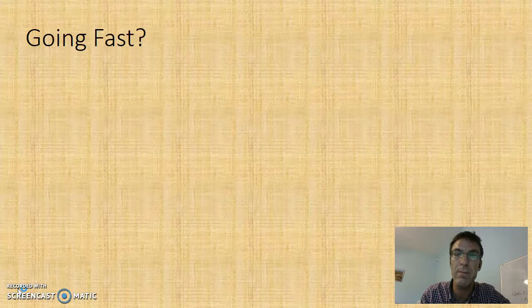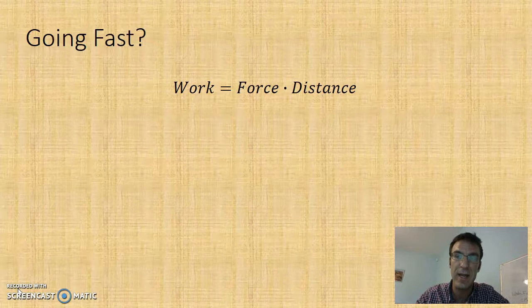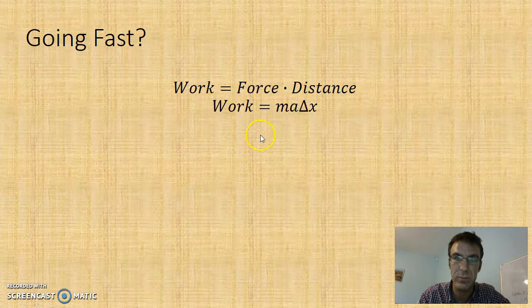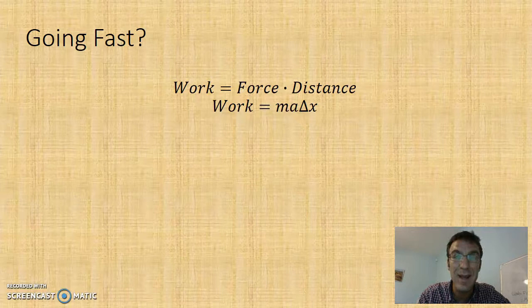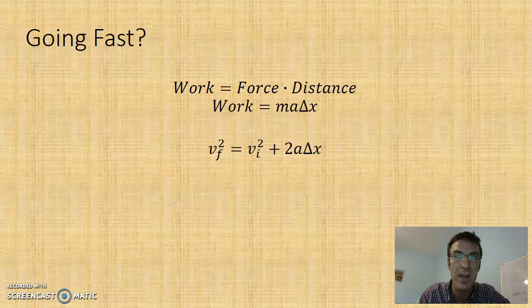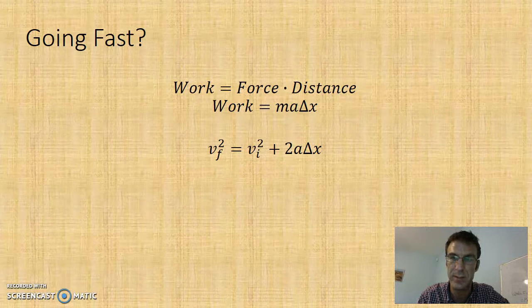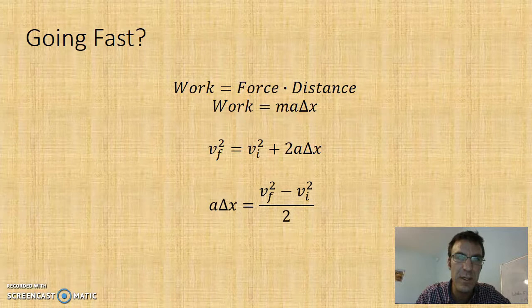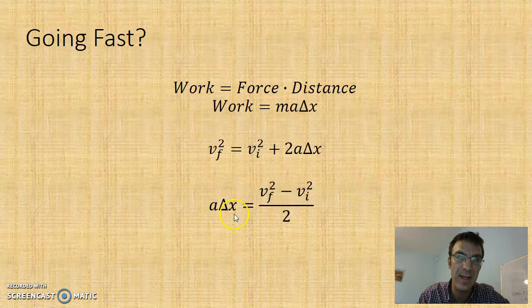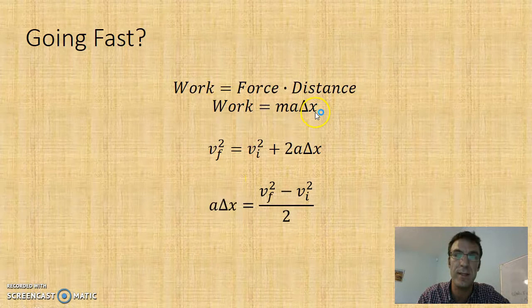Let's talk about work and how it relates to motion. We know work is force times distance. Force is mass times acceleration, and distance is Delta X displacement. We can do a bit of tweaking with an equation we know to get acceleration multiplied by Delta X. That comes from the time-independent equation: V final squared equals V initial squared plus 2a Delta X. Rearranging, we get a Delta X equals V final squared minus V initial squared, all over two.